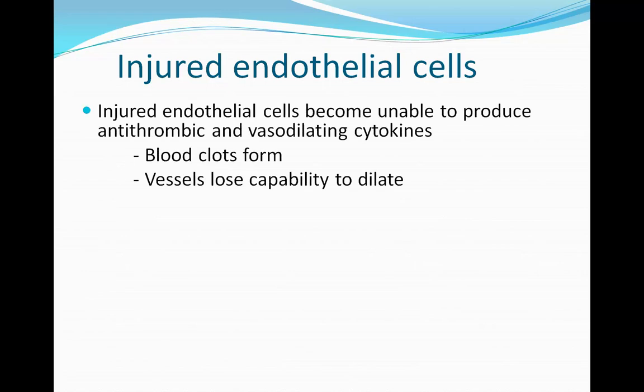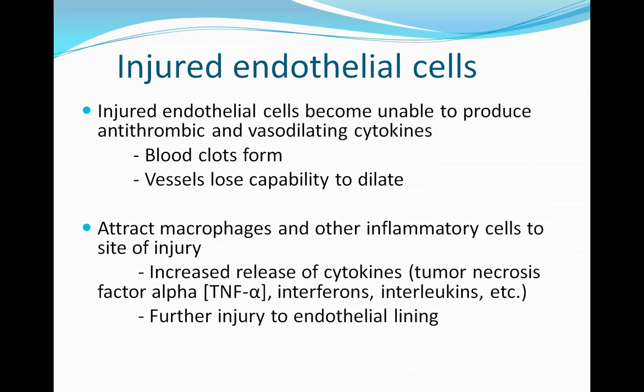Injured endothelial cells become unable to produce antithrombic and vasodilating cytokines. This causes blood clots to form, and vessels lose the capability to dilate. Injured endothelial cells also attract macrophages and other inflammatory cells to the site of injury, and the increased release of cytokines from the inflammatory cells causes even further injury.